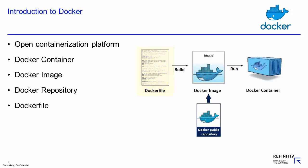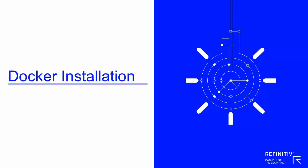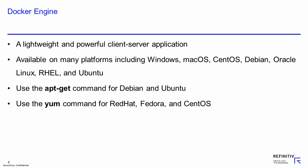In the subsequent sections, I will create the Elektron SDK Docker image from the Docker file and use that Docker image to run multiple Docker containers. Before using Docker, we need to install the Docker engine on the host machine. The Docker engine is a lightweight and powerful client-server application used to build, manage, and containerize the applications.